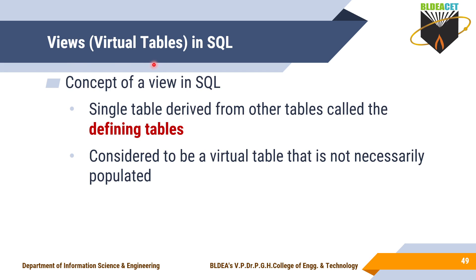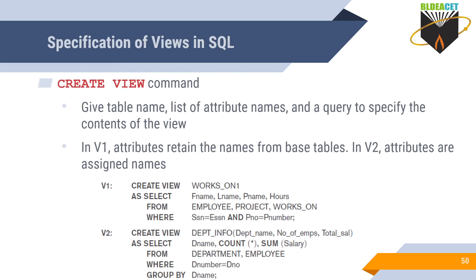Next is views — virtual tables in SQL. A single table derived from other tables is called a defining table and is considered a virtual table that is not necessarily populated. It is a temporary table; according to user requirements, if you want to retrieve data from multiple tables frequently, you can combine all those multiple tables as a virtual table and access it directly.